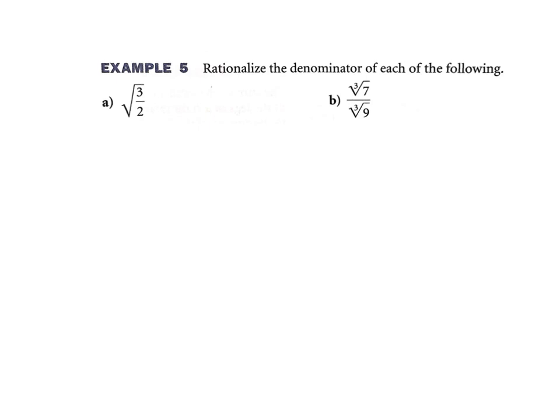Rationalize the denominator — you cannot leave a radical in the denominator. So for square root of 3 over square root of 2, I'm going to multiply both numerator and denominator by square root of 2, because that's really just multiplying by 1. On the denominator: square root of 2 times square root of 2 is square root of 4, which is just 2. On the top I have square root of 6. I've rationalized the denominator — taken a radical and made it not a radical anymore.